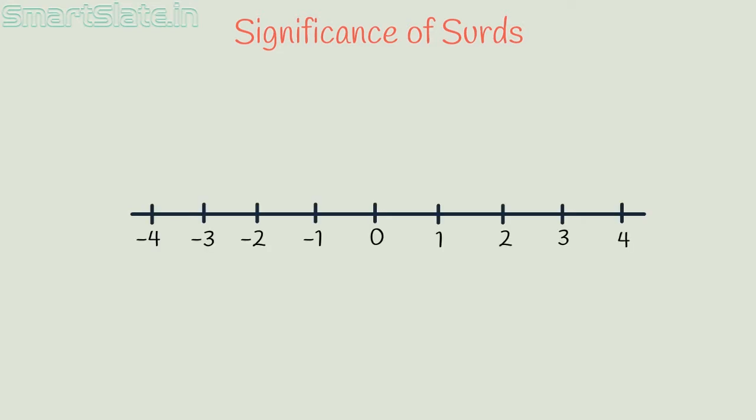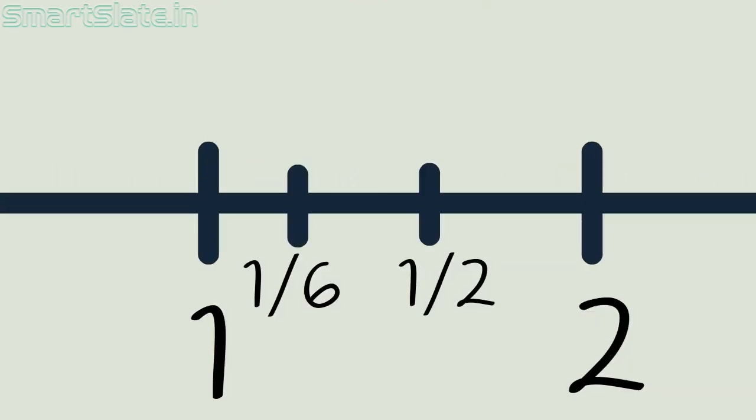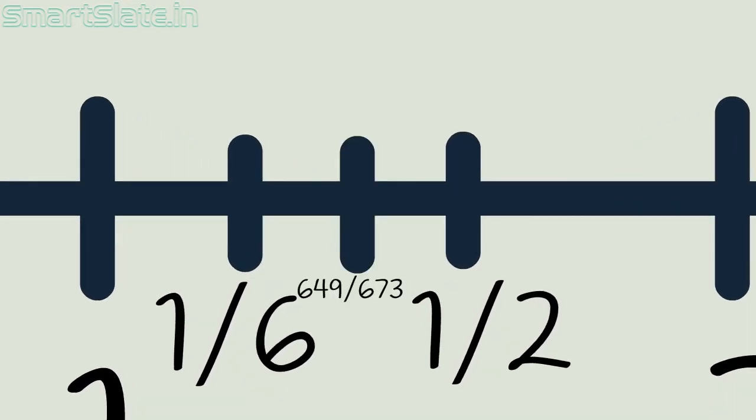Let us assume that the integers take some of these places. Now the rational numbers will take some of the places in between these integers. In fact, the rational numbers take a lot of places. Given two rational numbers, you can always find another rational number in between them.